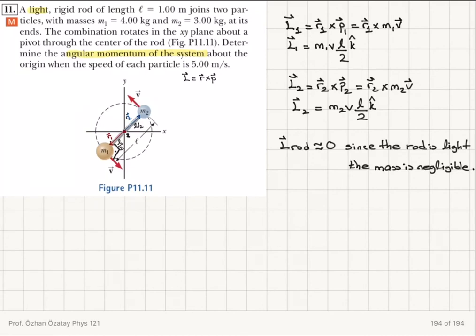Therefore, the only contribution to the angular momentum of the system comes from L1 and L2. If I want to find the total angular momentum of the system, I need to add up these vectors L1 and L2. Luckily, they are both in the same direction, in k hat direction.